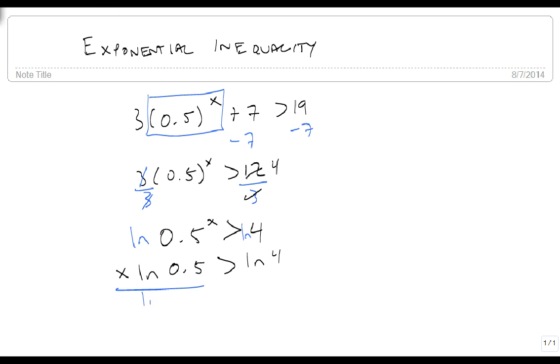Our last step, remember that since this is a number, we divide it over to the other side. And so we get that x is strictly bigger than the natural log of 4 over the natural log of 0.5.